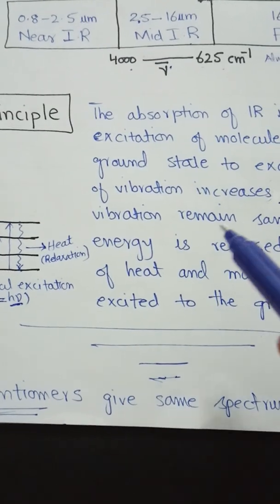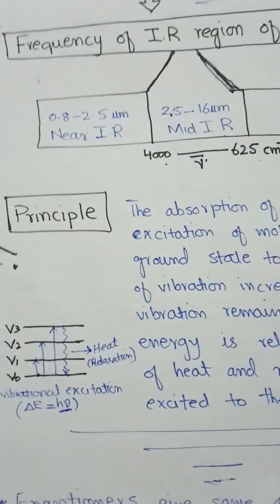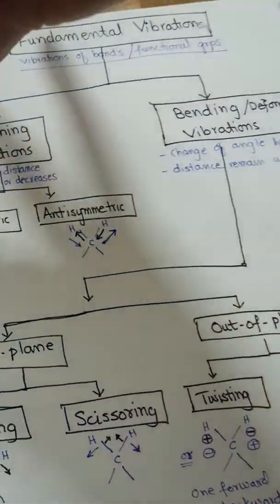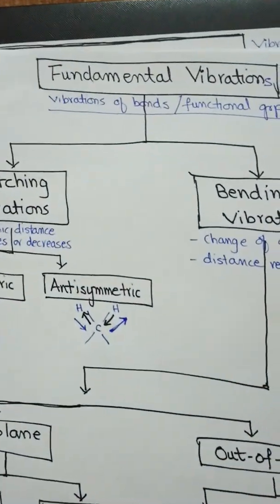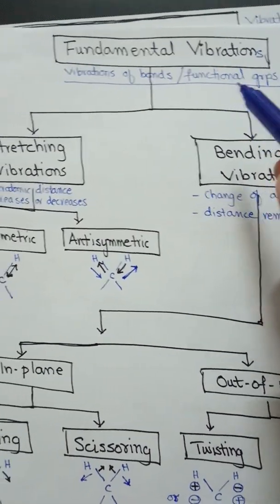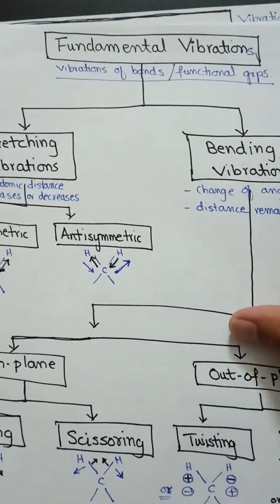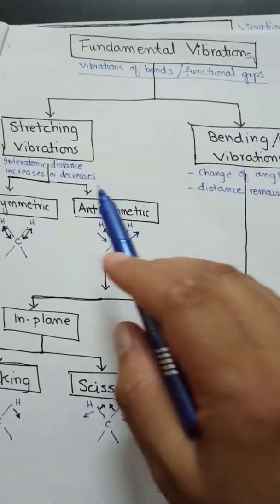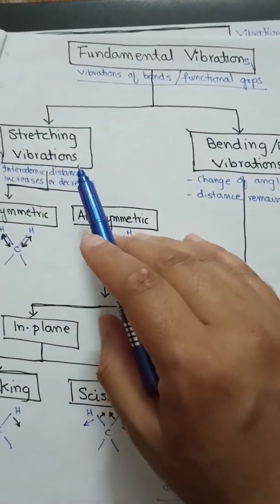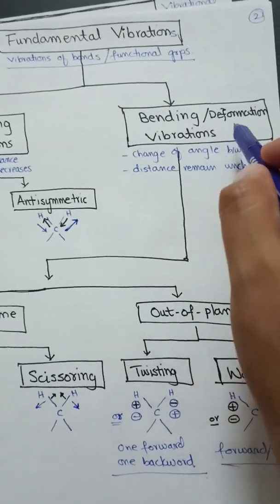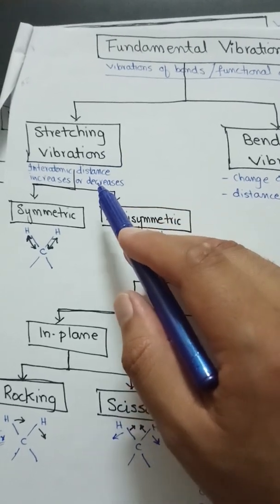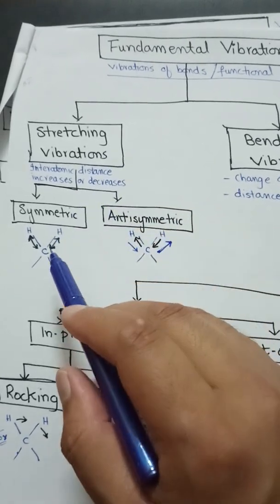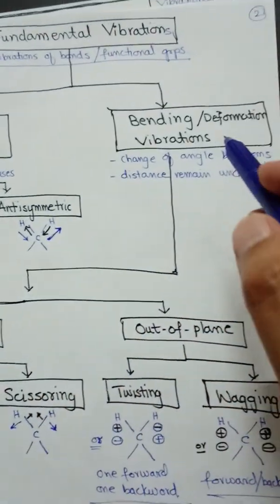The energy is dissipated in the form of heat. Looking at different types of fundamental vibrations — fundamental vibrations are the vibrations of different bonds or functional groups. There are two types: stretching vibrations and bending or deformation vibrations.